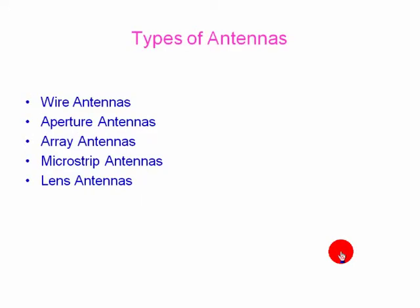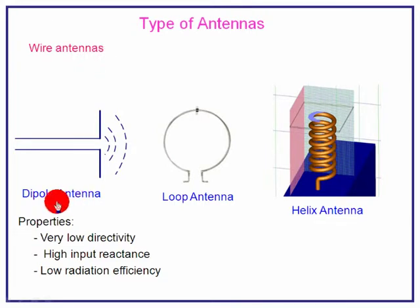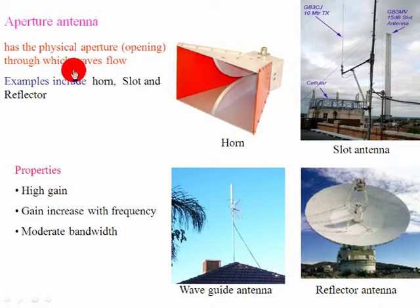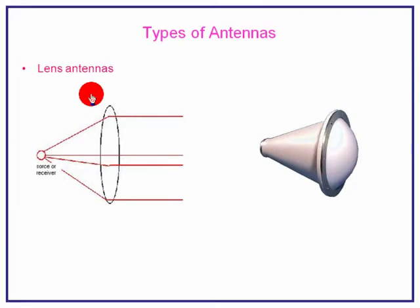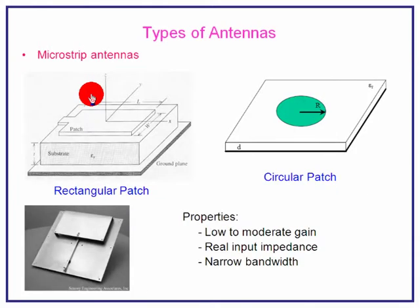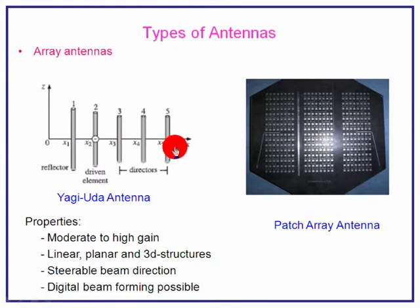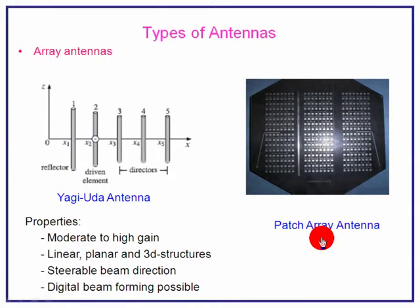Next, we will see the types of antenna. The basic platforms of antenna include wire antenna, aperture antenna, array antenna, microstrip antenna, and lens antenna. Wire antennas could be dipole, loop antenna, and helix antenna. Aperture antenna has a physical aperture through which waves flow; examples include horn, slot, and reflector. Lens antennas are not commercially used due to their huge weight. Microstrip antennas are the printed form of antennas which may take either rectangular or circular shape. Antennas can also be grouped together to form an array, either a passive array or an array of printed structures — nowadays called a phased array system.